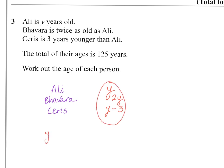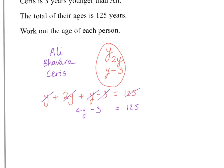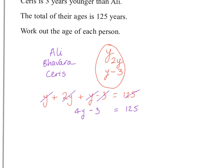So you'd have y plus 2y plus y minus 3 would be equal to 125. So we'd have 1y and 2y, that's 3y, and one more, that would be 4y minus 3 is 125. And then from here I would solve this linear equation, and I would add 3 to both sides, which in turn would give me 4y equals 128.